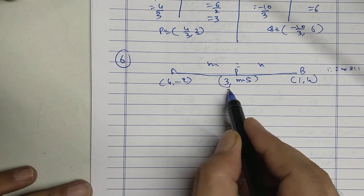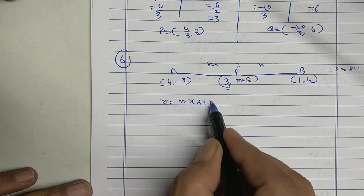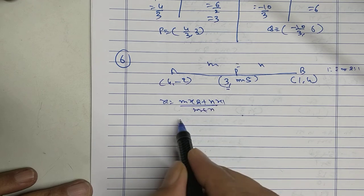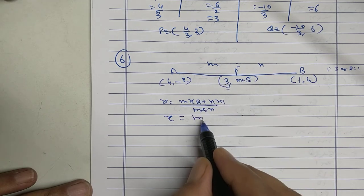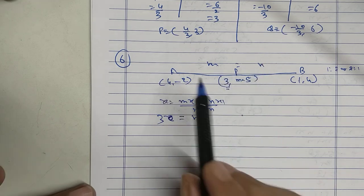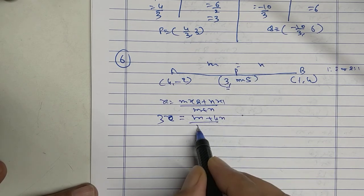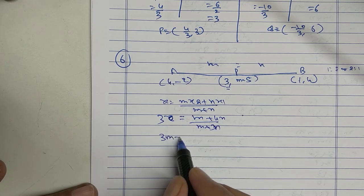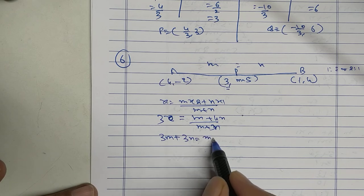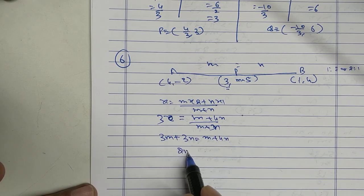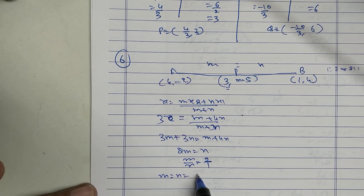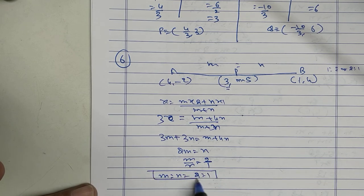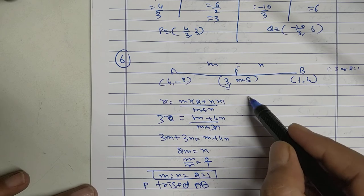Let us find out. I know x value. X equal to m x2 plus n x1 upon m plus n. M x2. X I know already 3. M x2, m plus 4n. Cross multiplication. 3m plus 3n equal to m plus 4n. 2m equal to n. M upon n 2 is to 1. So m is to n is 2 is to 1. That shows that P trisects A, B. I got the ratio.